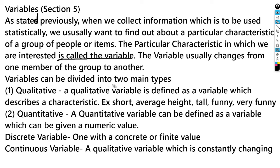Variables can be divided into two main types: qualitative and quantitative. A qualitative variable is defined as a variable which describes a characteristic, for example short, average height, tall, funny, or very funny. These things will definitely change based on the country you're in.